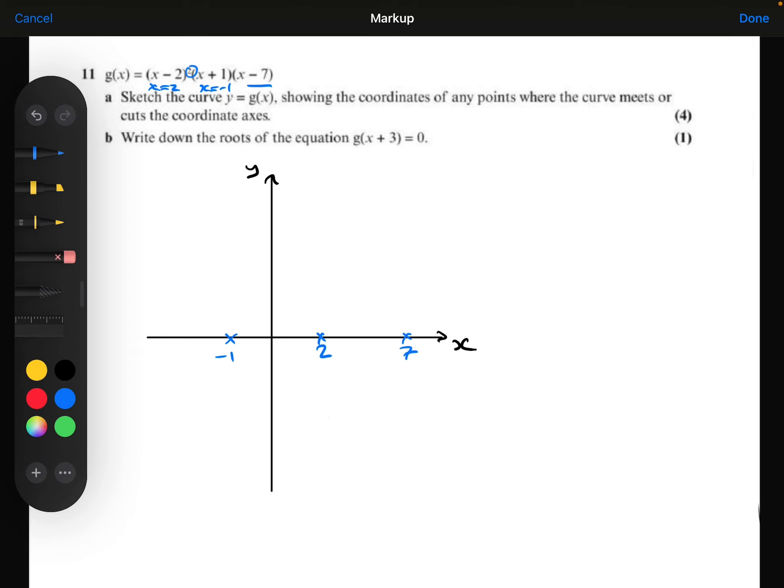I can work out the y-intercept because that's going to be when x equals 0. So if I make 0 here, here, and here, the 0 minus 2 is minus 2 squared times the 0 plus 1 times the 0 minus 7, which gives 4 times 1 times minus 7, which is minus 28, which I'm going to put there, roughly.